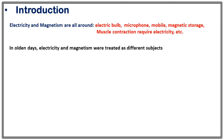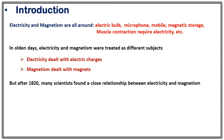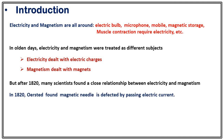In olden days, electricity and magnetism were treated as different subjects. They thought that electricity dealt with electric charges and magnetism dealt with magnets. However, around 1820 and after that, many scientists found a close relationship between electricity and magnetism.